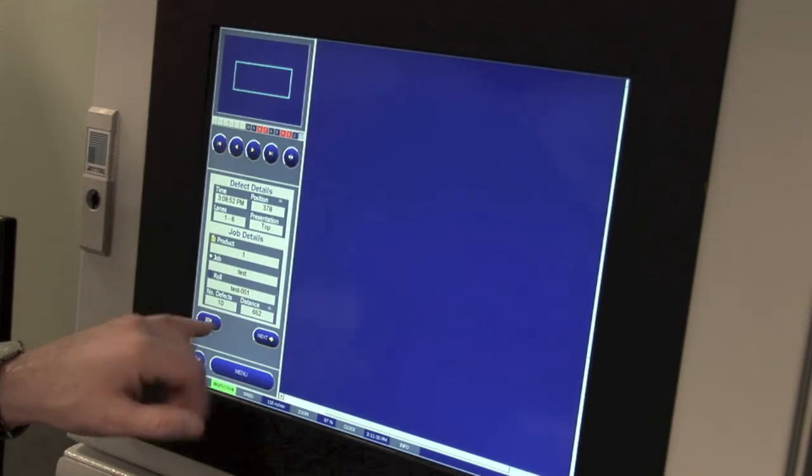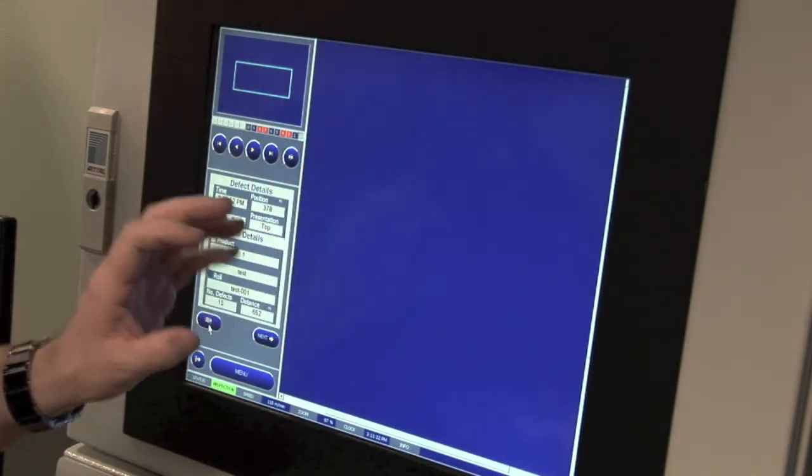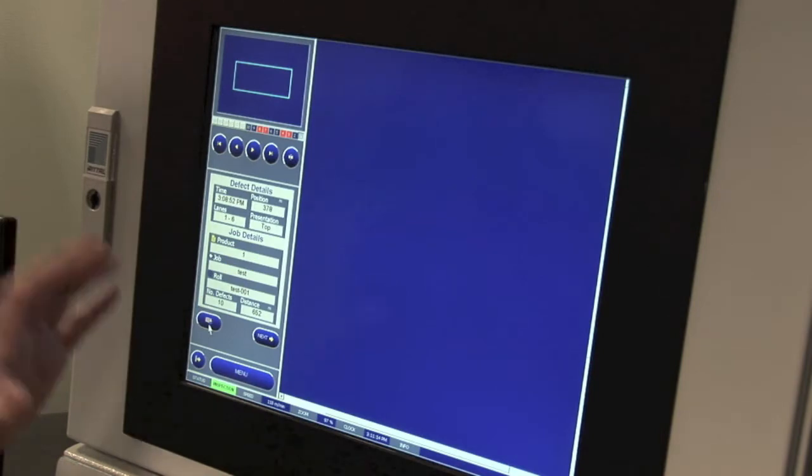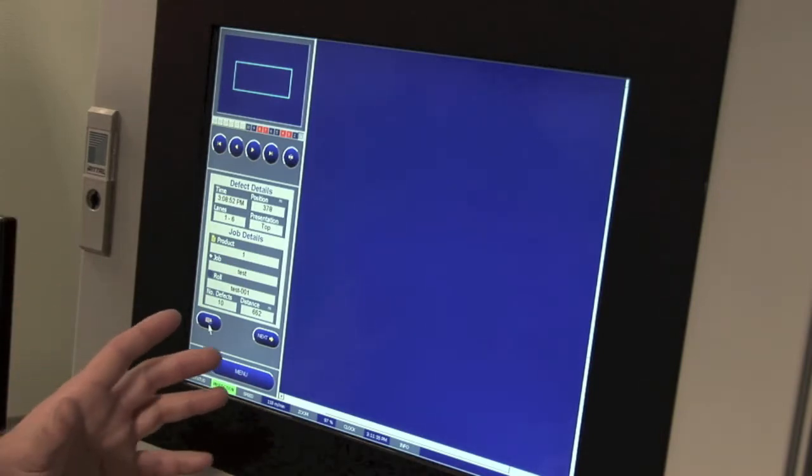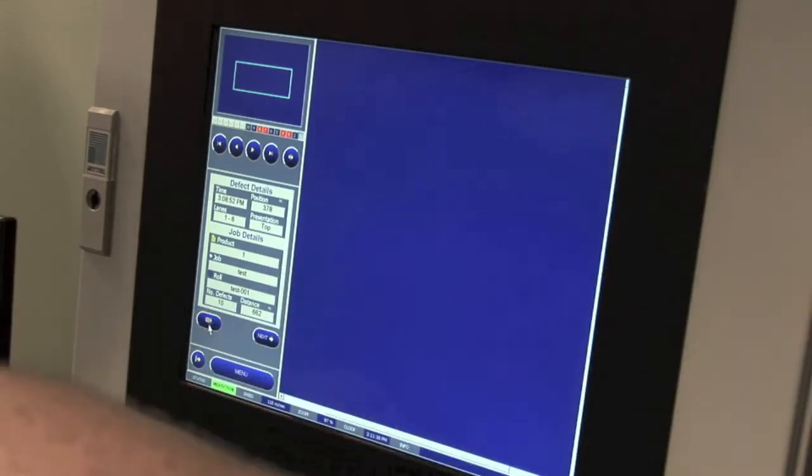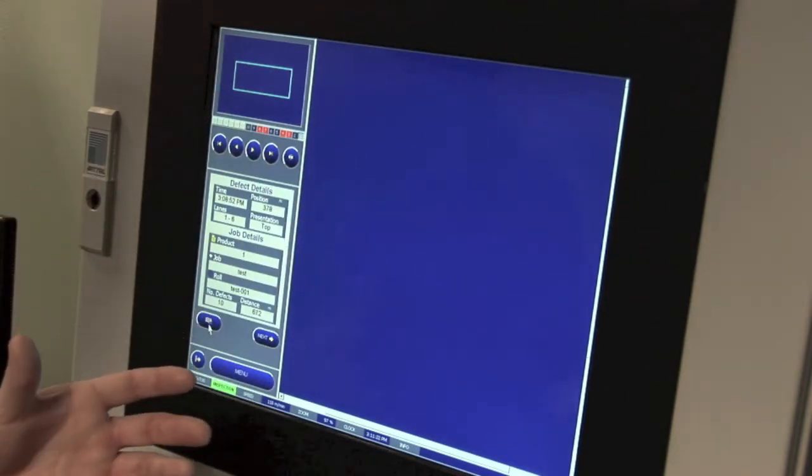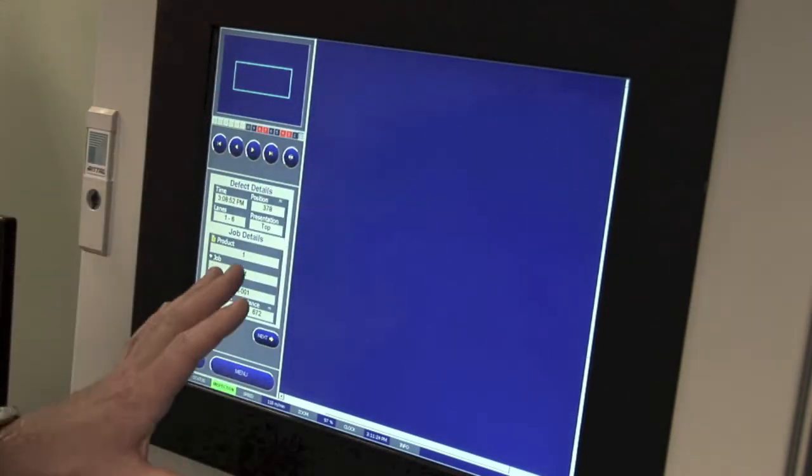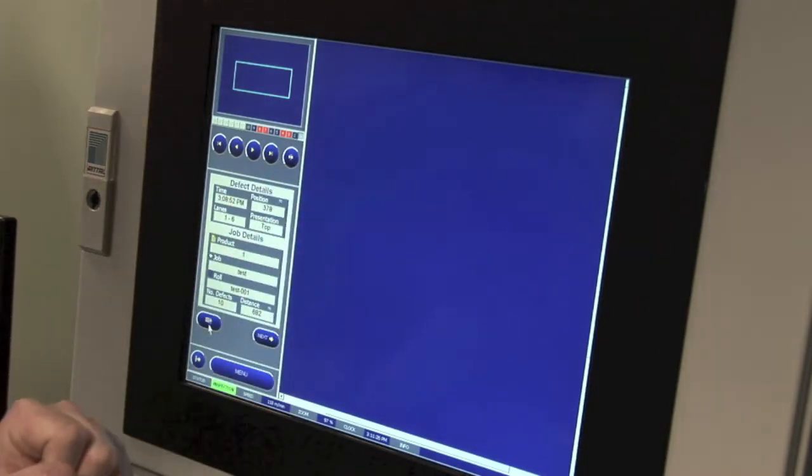So by clicking this little button down here, I put back up our blank screen. The operator now knows, since he's pressed that button, there have not been any defects. And he can now walk down a press that could be 100, 150 feet long in a very noisy environment and take a glance up at the screen and see that no more defects have occurred.